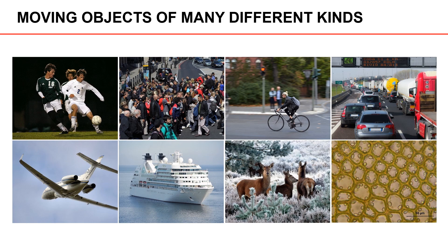or pedestrians moving around in a city. It could also be cyclists of different kinds, like bicyclists in the image shown here, or motorcyclists. Where humans live, there are many different types of vehicles, ranging from small compact cars to large trucks. In other applications, we might be interested in tracking flying objects, such as airplanes, or seaborne objects, such as small boats or large ships. Lastly, the objects of interest can also be animals, or cells observed in a microscope.